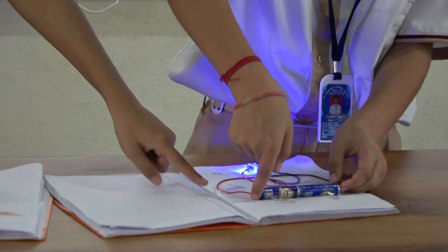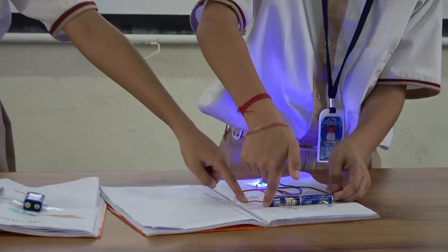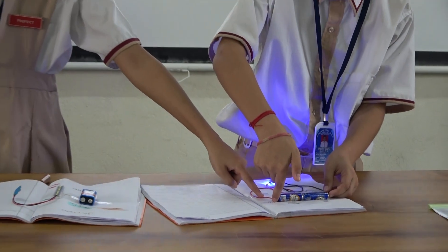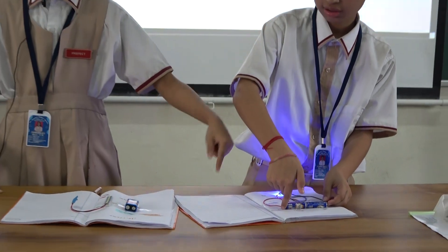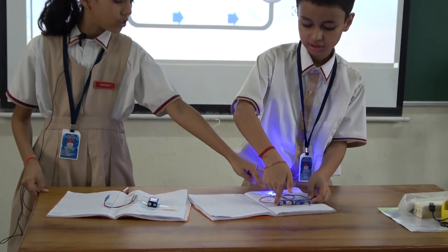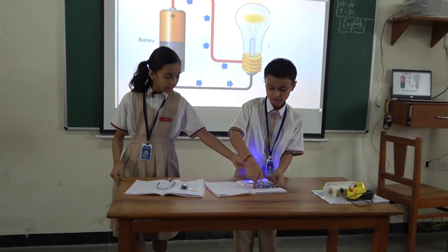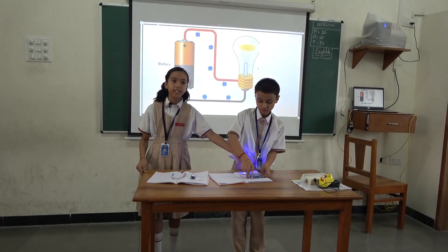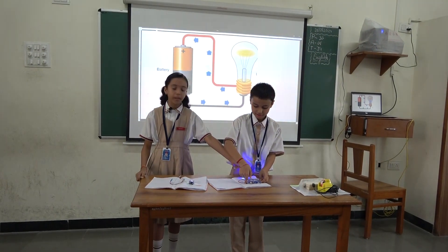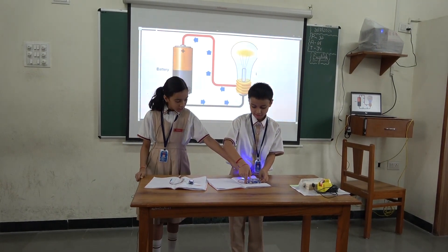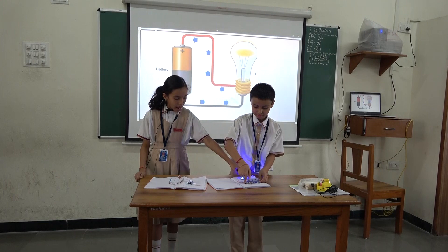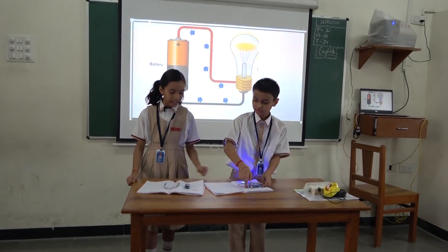He has connected the red wire with the negative terminal. So energy starts to flow from that wire, and the black wire connects with the positive terminal. Energy is going there and glowing the LED bulb.